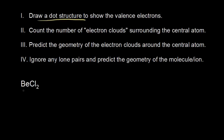Let's draw a dot structure for BeCl₂. You find beryllium on the periodic table — it's in group 2, so it has 2 valence electrons. Chlorine is in group 7, and we have 2 of them, so 2 times 7 is 14. And 14 plus 2 gives us a total of 16 valence electrons that we need to account for in our dot structure.